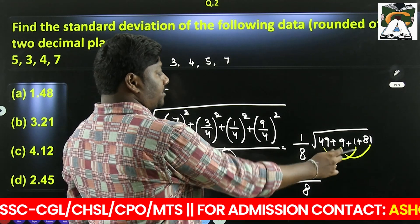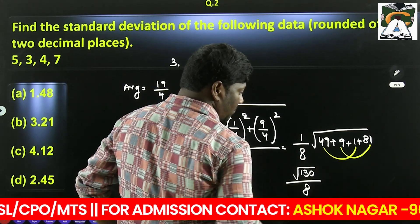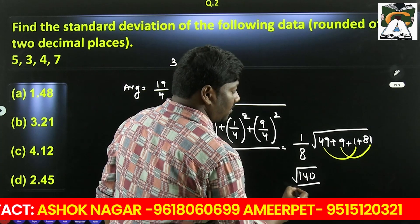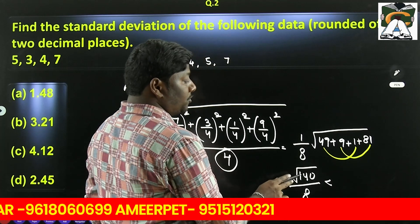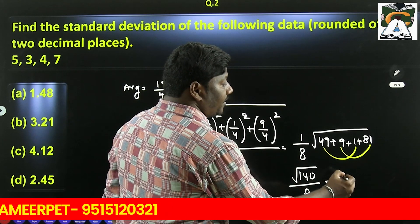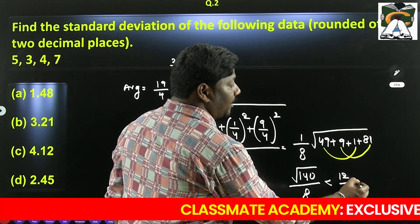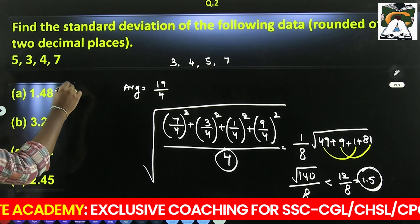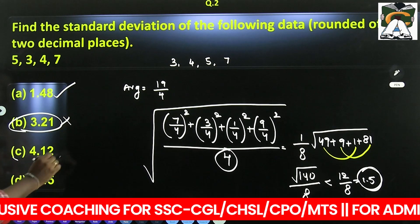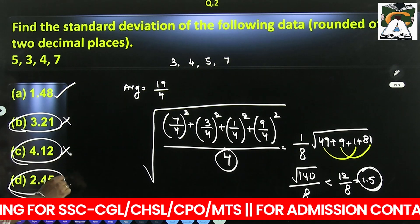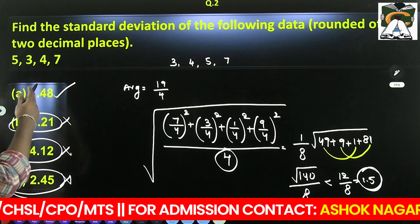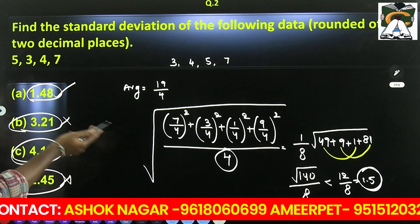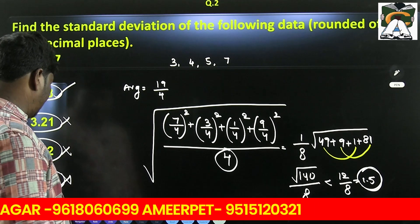49 plus 1 is 50. 50 plus 90 is 140. So we have root of 140 divided by 8. Definitely our answer will be less than 12 divided by 8, because root of 144 is 12. So 12 by 8 is 1.5. Our answer is slightly less than 1.5. Looking at the given options: 1.48, 3.21, 4.12, 2.45. By looking at the differences, we can figure out 1.48 is the correct answer, slightly less than 1.5, which is exact. We could calculate the exact answer, but there's no need here.